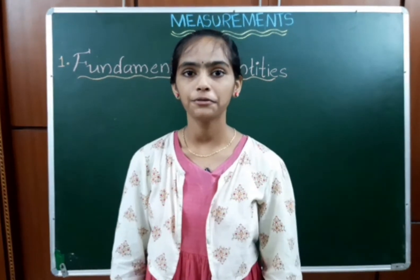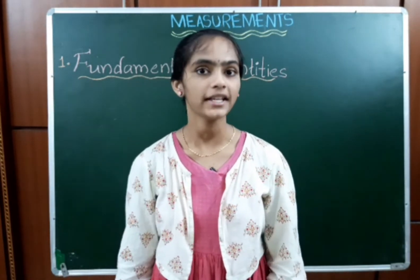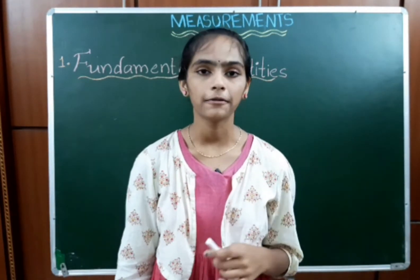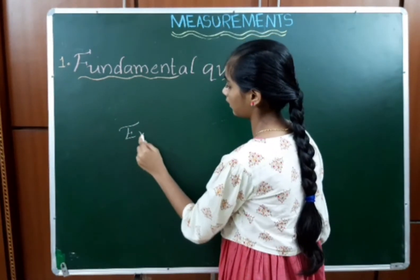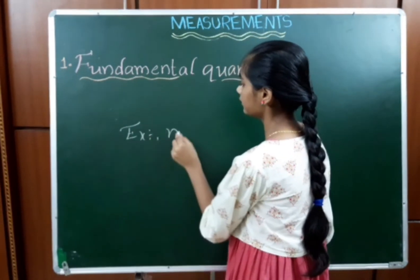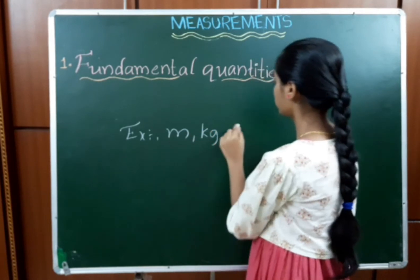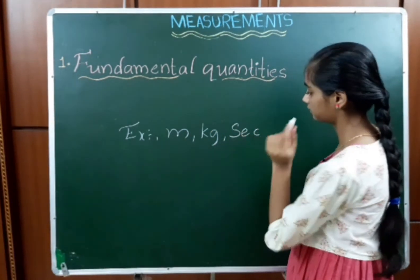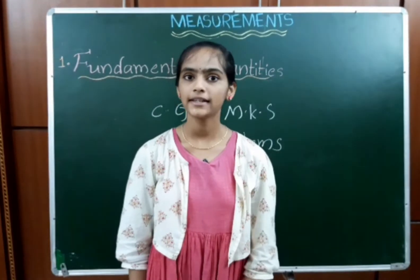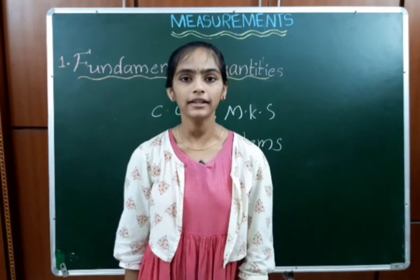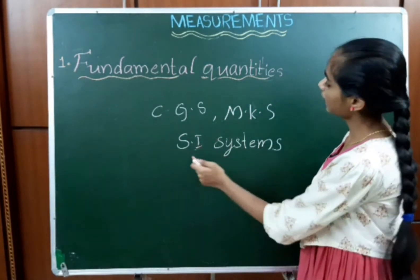The units which are used to measure fundamental quantities are known as fundamental units. Examples are meter, kilogram, and second. The fundamental quantities are expressed in three types of systems: CGS, MKS, and SI systems.